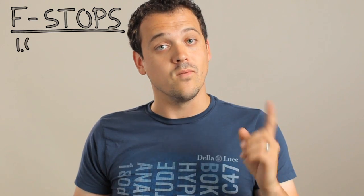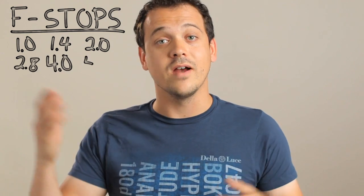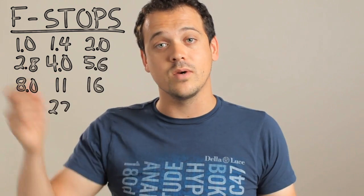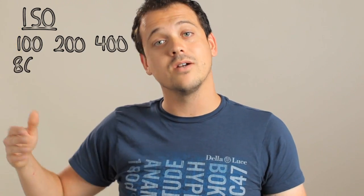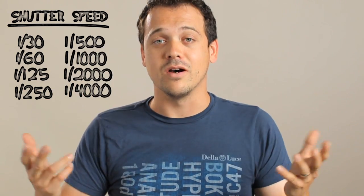The full f-stops are f1, 1.4, 2.0, 2.8, f4, 5.6, f8, f11, f16, f22, and it continues. The different stops in ISO and shutter speed are very easy. For ISO it's 100, 200, 400, 800, 1600, 3200. For shutter speed it starts at 1/30th, 1/60th, 1/125th, 1/250th, 1/500th, 1/1000th, 1/2000th, 1/4000th, and so on.